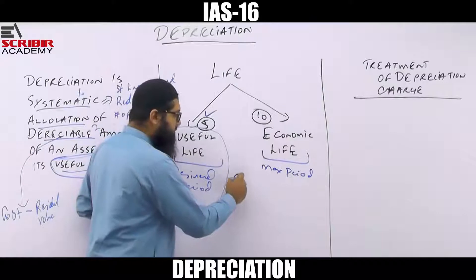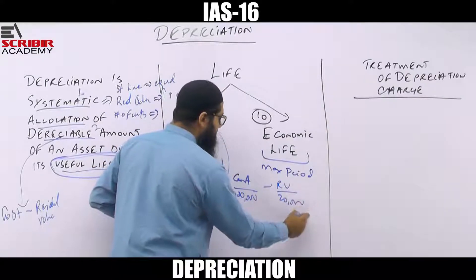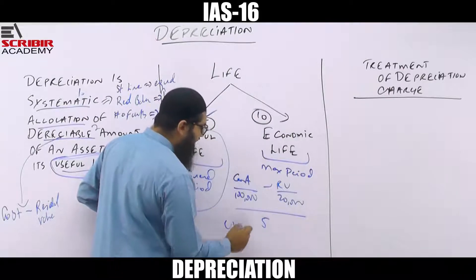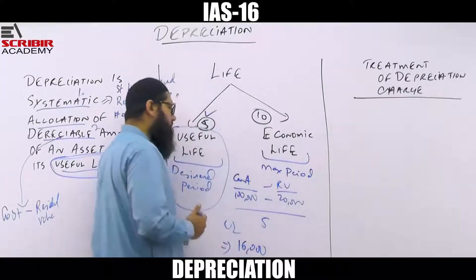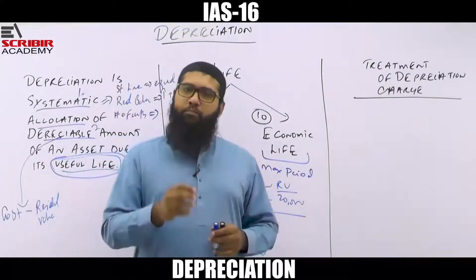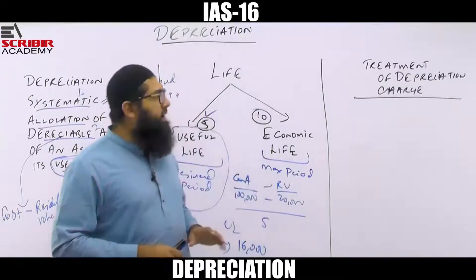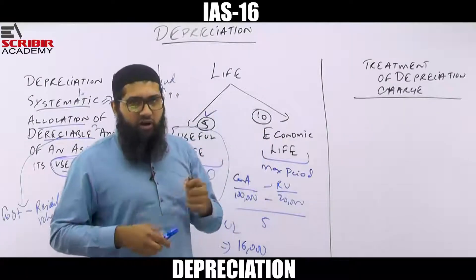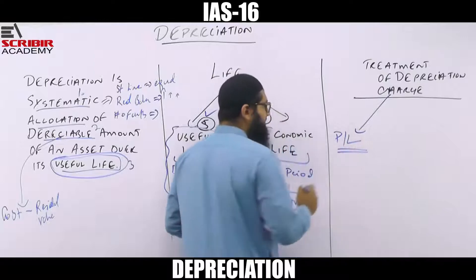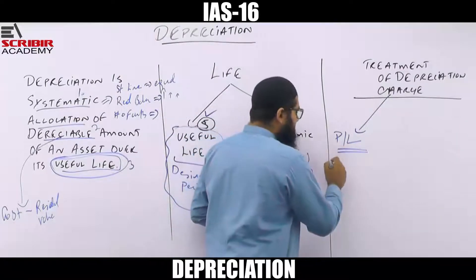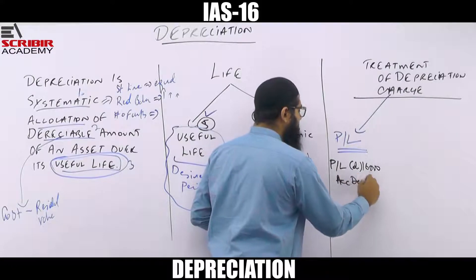Assume an asset had a cost of 100,000, an expected residual value of 20,000, and a useful life of five years. Depreciation would be 100,000 less 20,000 divided by five, giving a depreciation expense of 16,000 per year. One accounting treatment per IAS 16 is to recognize this as an expense in the P&L: debit P&L with 16,000 and credit accumulated depreciation with 16,000.